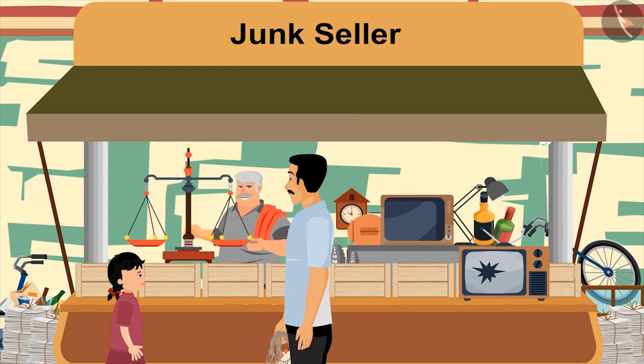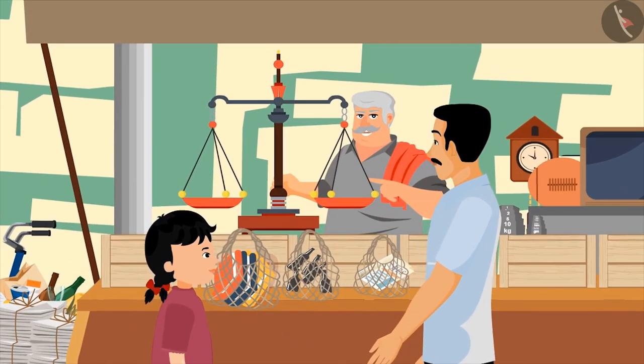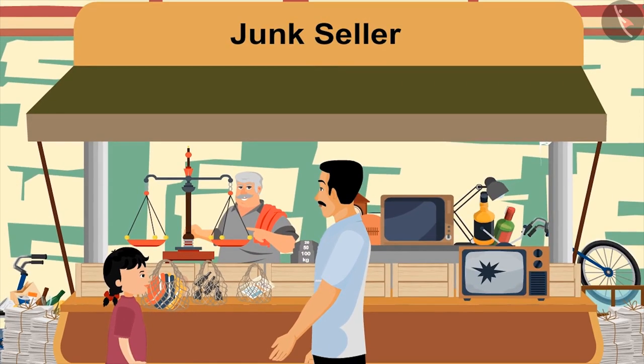"Well, say what have you brought today?" "Uncle, here is some newspapers, some old books, and some cans and bottles." "Give it to me, let me weigh them. Hey, why is Neetu looking here and there? She is looking a bit shocked too."